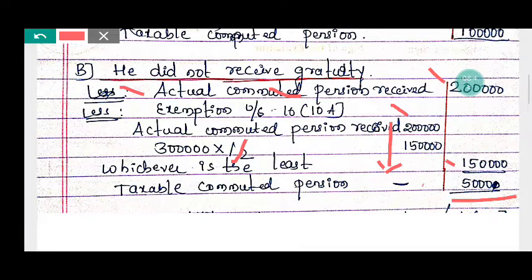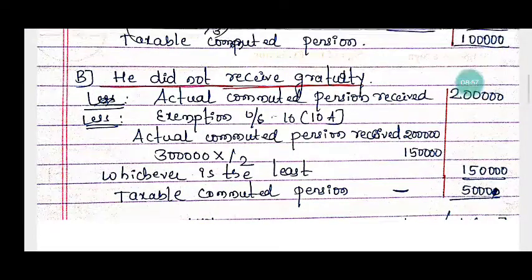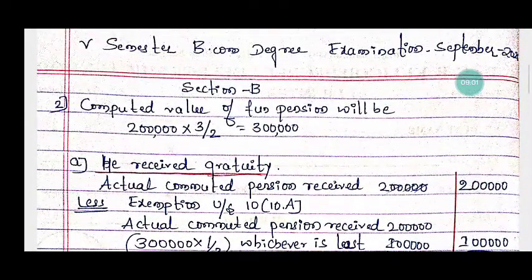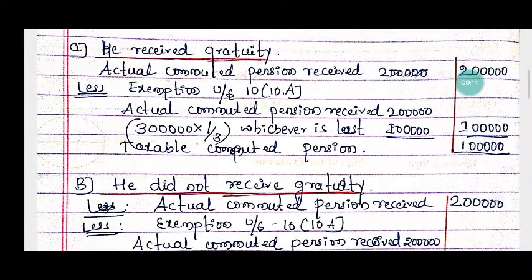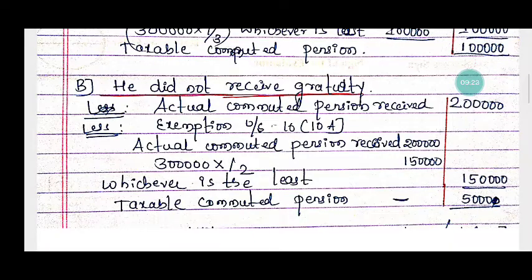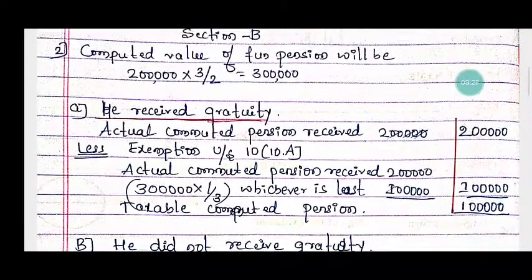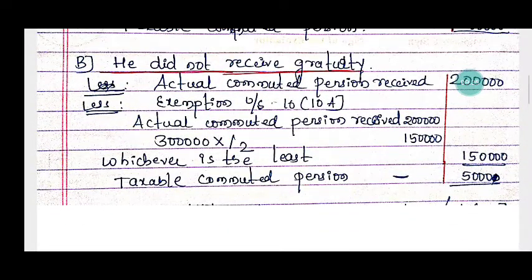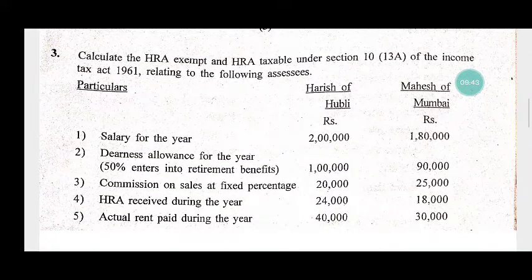To summarize: the full value of pension is three lakh rupees. In Case A, where he received gratuity, the exemption is rupees one lakh and the taxable amount is rupees one lakh. In Case B, where he did not receive gratuity, the exemption is rupees one lakh fifty thousand and the taxable amount is rupees fifty thousand. Thanks for watching my videos.